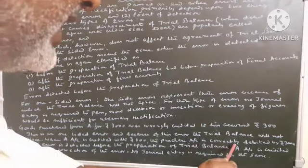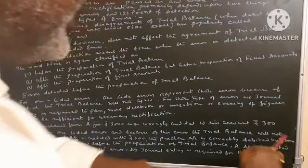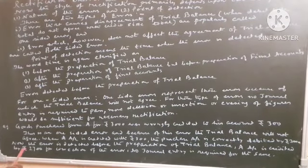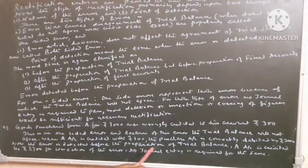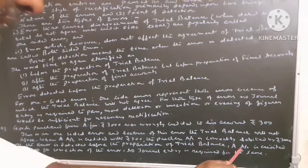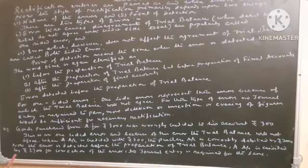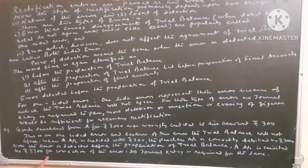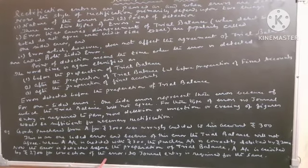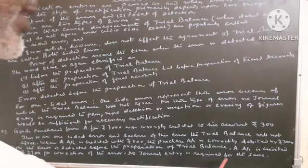the purchase account correctly debited by how much? That is Rs. 3000. Now, the error is detected before the preparation of trial balance. A account is credited by Rs. 2700 for correction of the error. No journal entry is required for the same.